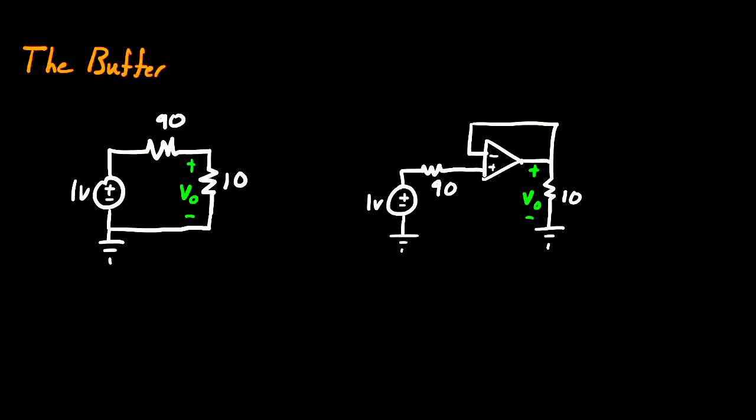Before we jump into the buffer circuit, I want to first talk about this first situation over here on the left, where you have a Thevenin source, which is a voltage source with a series resistance connected to a load. If you wanted to calculate the value of VO, you could do that by saying VO divided by VI is equal to the 10-ohm resistor divided by 90 plus the 10-ohm resistor.